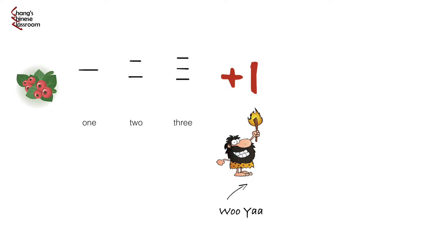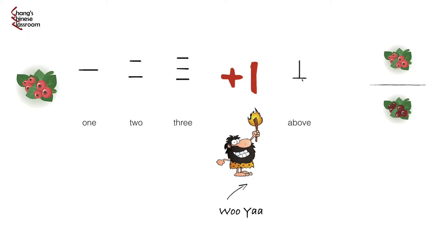With more berries collected, we found out we not only have the good ones but also the bad ones. So we draw a simple line in between to separate them, so we know which part is the good ones and which part has the bad taste. We also need symbols to remind us, because after a few days we might forget. So we use one horizontal line plus one vertical line above it to represent the meaning 'above', reminding us the berries above are good ones. Opposite to that, we use the same horizontal line with one vertical line below it to represent 'below', reminding us the ones below are bad. That's how we created the characters for these two.